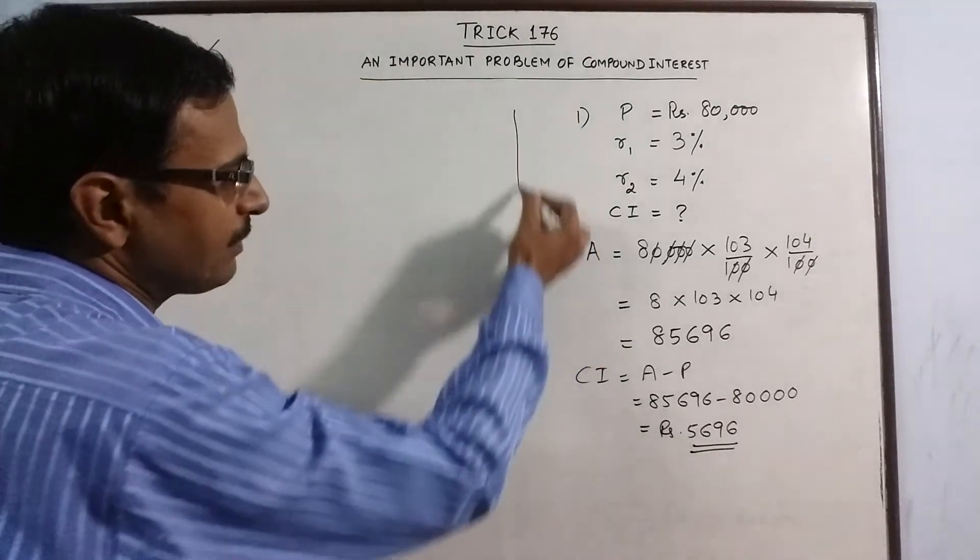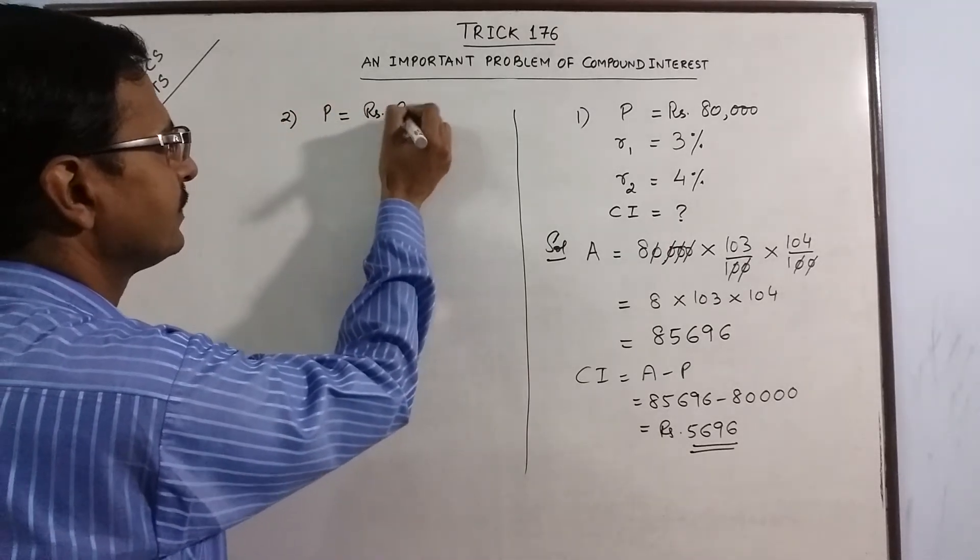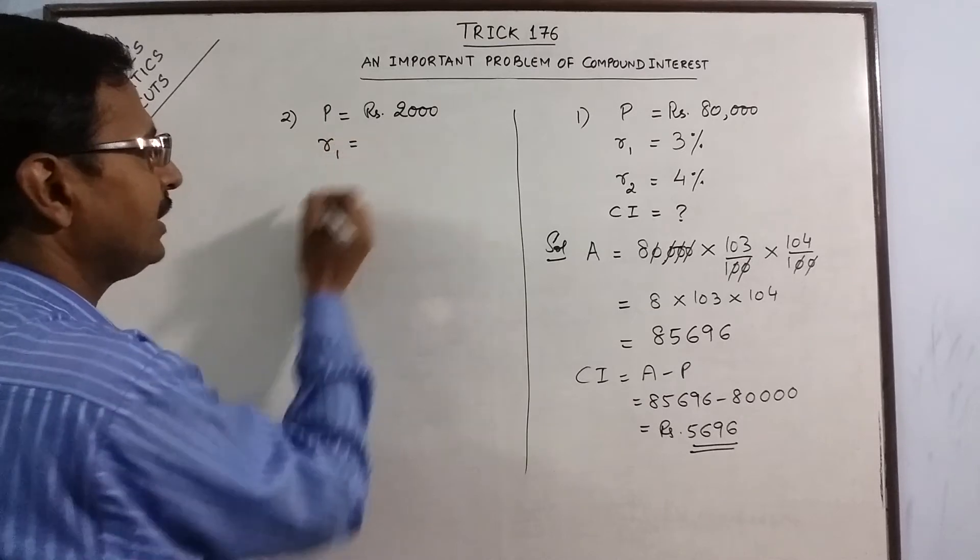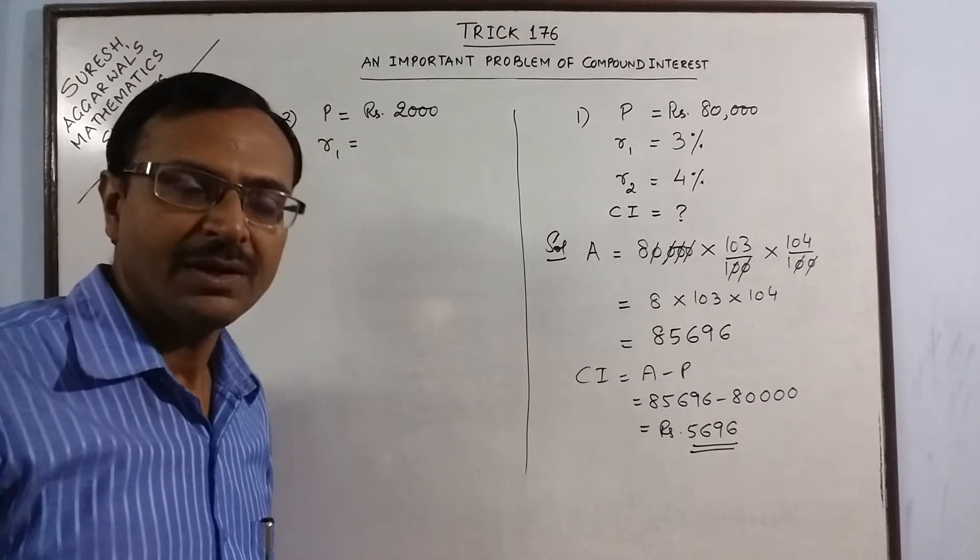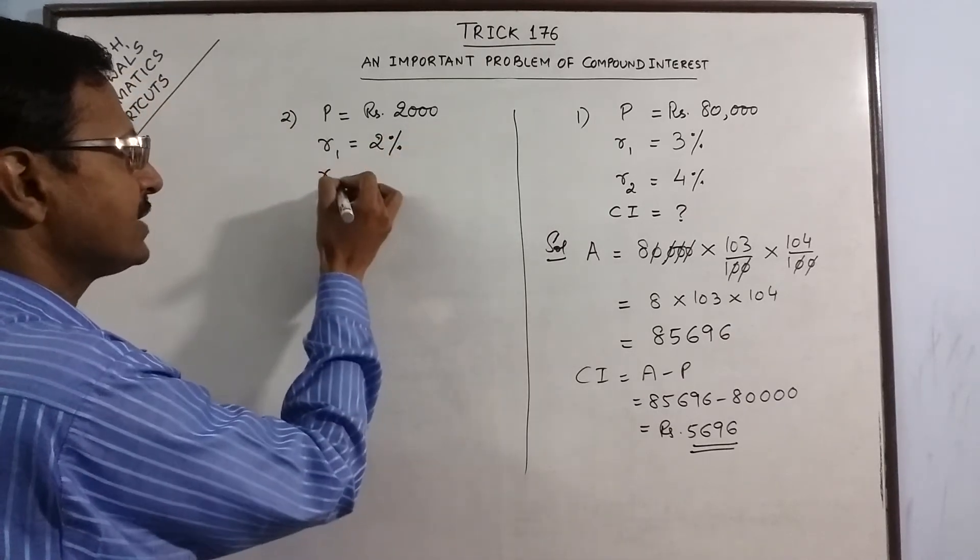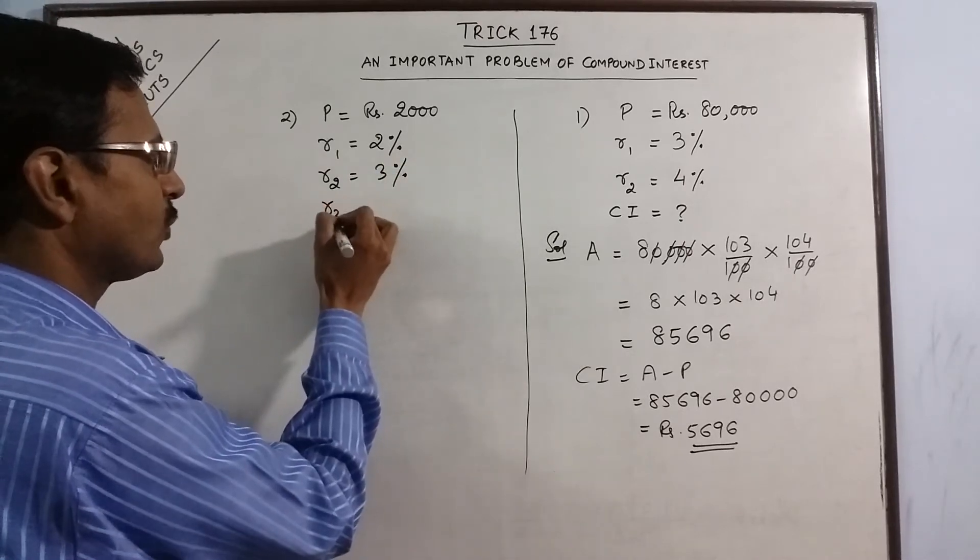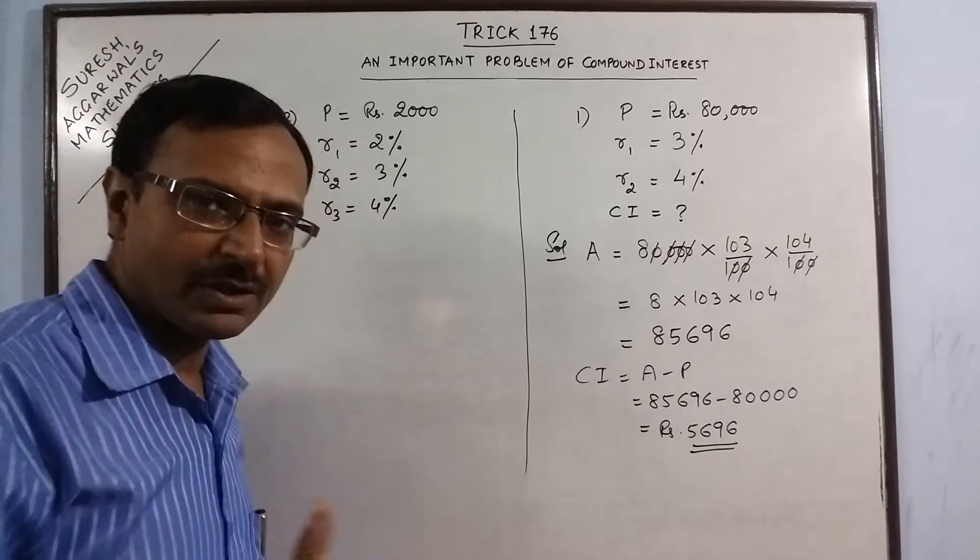Take one more example. Say we have now the principal amount is rupees 2000 and we have now 3 years different rate of interest. Say we have in the first year the rate of interest is 2 percent. In the second year it is 3 percent. In the third year it is 4 percent. I am just taking one hypothetical example so that you understand the method.